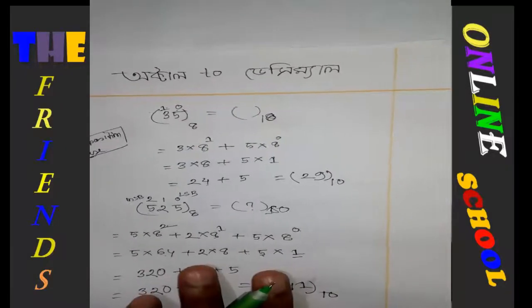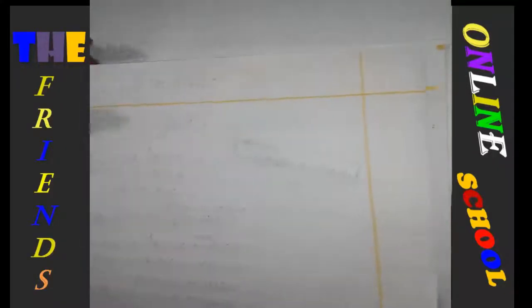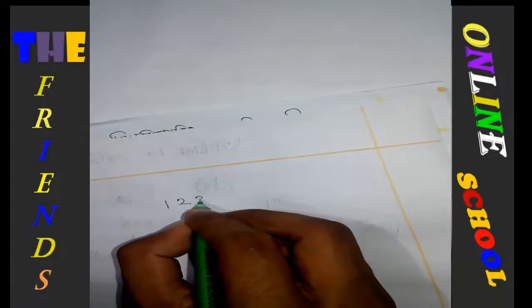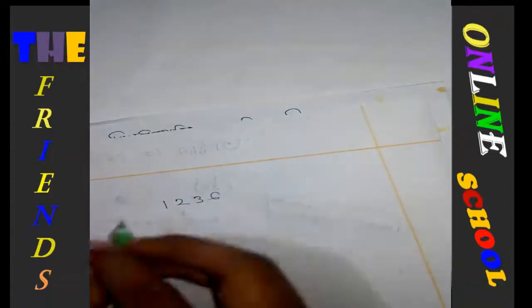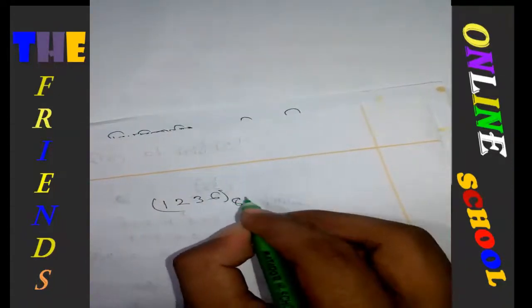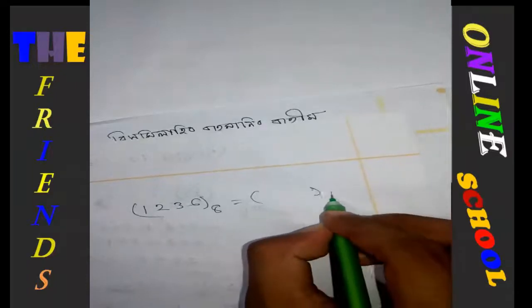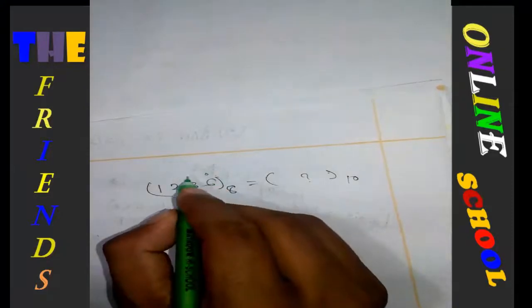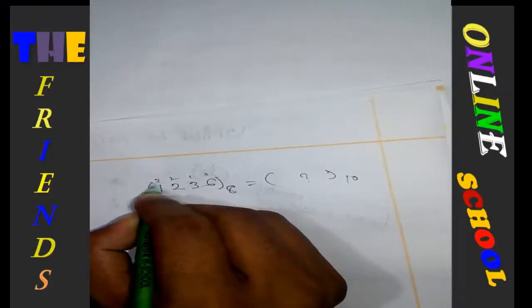At the last example, we will show that if this is the number, we'll take 3, 2, 3, 6. Then (3236)₈ in decimal. Okay, so first the position is complete and this is the digit position.